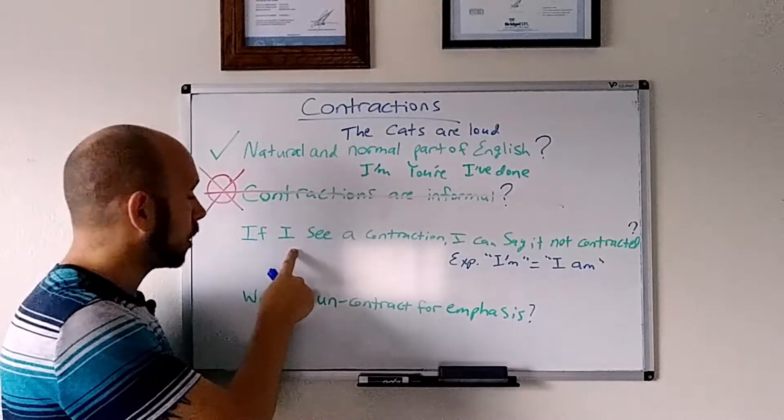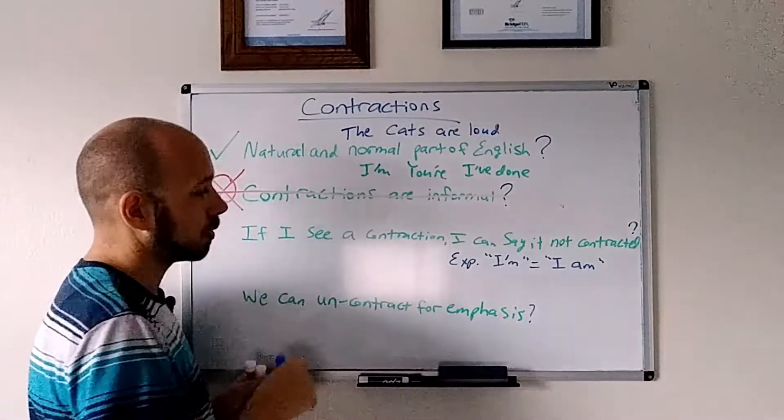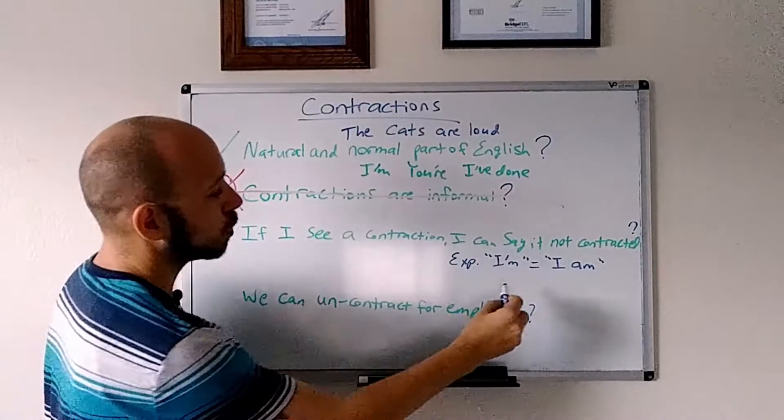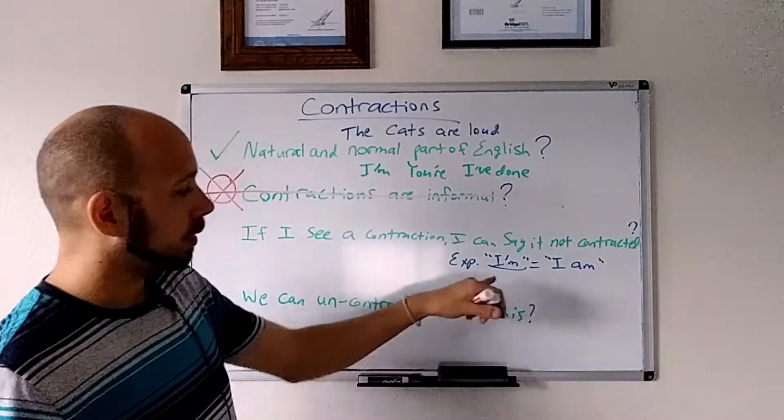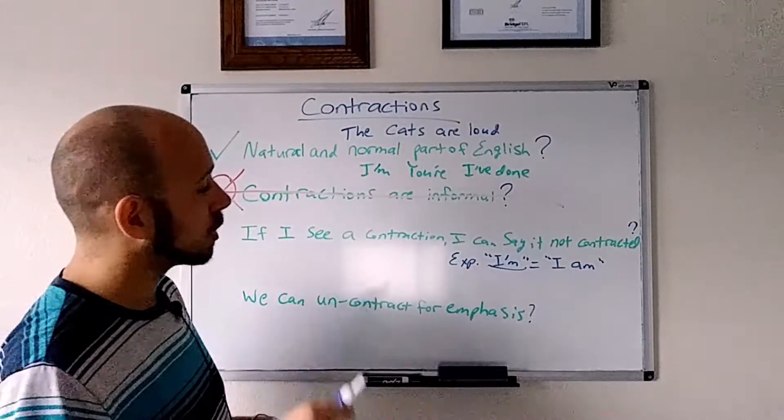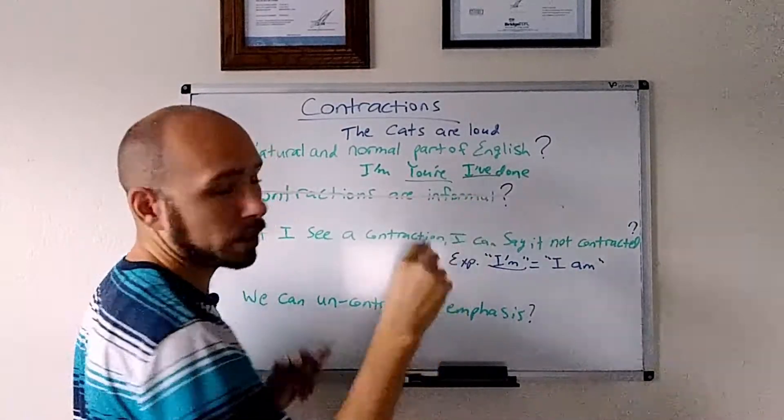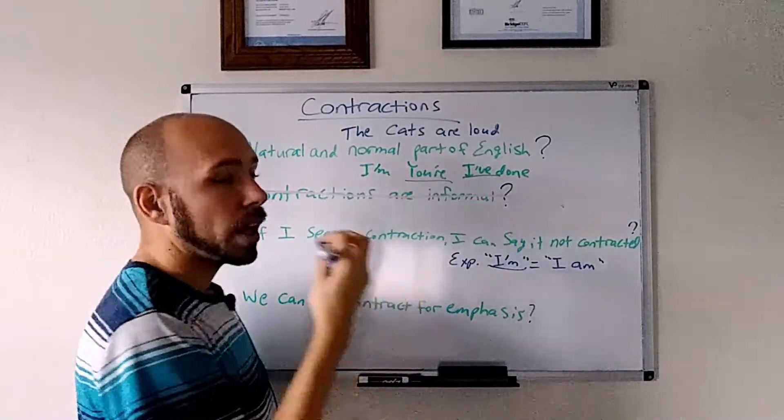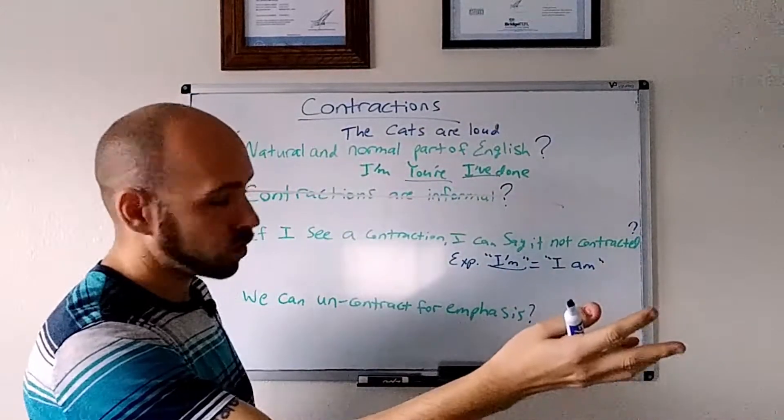If I see a contraction, so for example, if you read this, I'm, okay, I apostrophe M or this one or this one, it doesn't matter. If you see a contraction and you were to say that contraction, you say what you read, right?